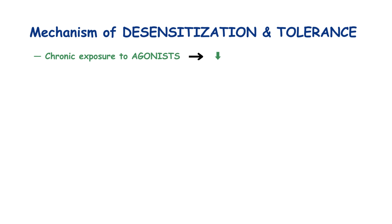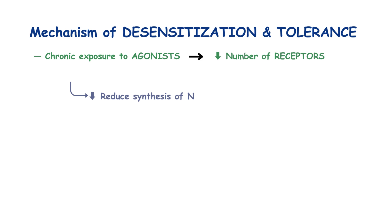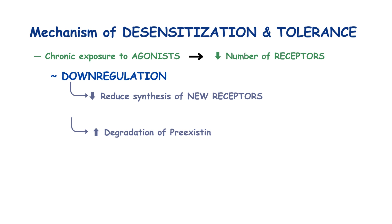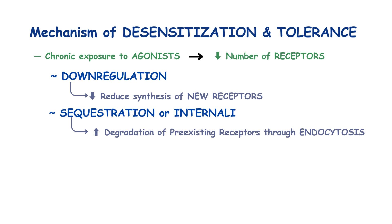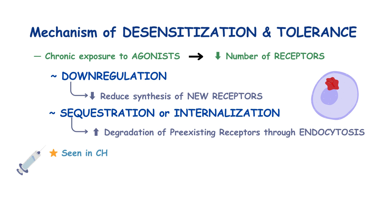There are several mechanisms responsible for these phenomena. First, chronic exposure to agonists causes a decrease in the number of receptors. This could result from the reduced synthesis of receptors, also known as down-regulation. Additionally, chronic exposure increases the degradation of pre-existing receptors through endocytosis, also known as sequestration or internalization — where the cell swallows up the receptor in vesicles pinching off from the cell membrane and sends them to the lysosome for digestion.